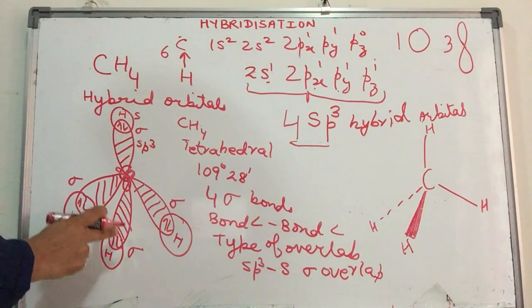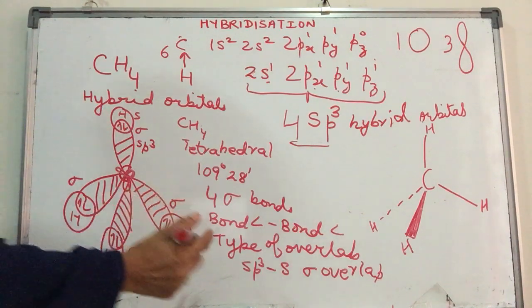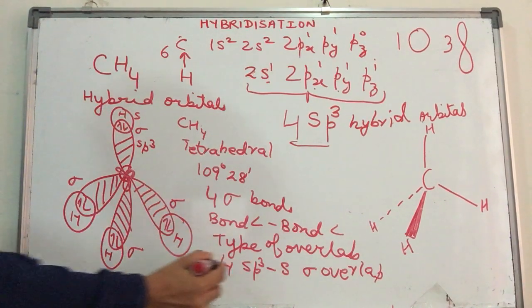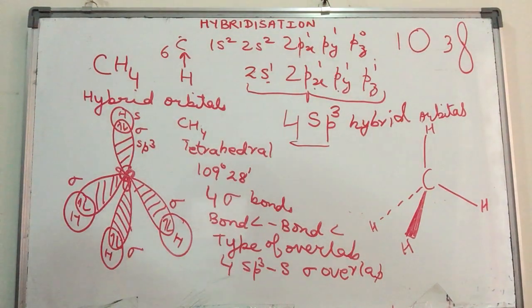How many of such overlaps are here? One, two, three, and four. I have four sp³-s sigma overlaps. This is one type of hybridization we've spoken about. There are other types. First, concentrate on this, grasp this, and then the others become quite easy.